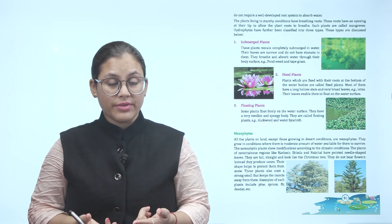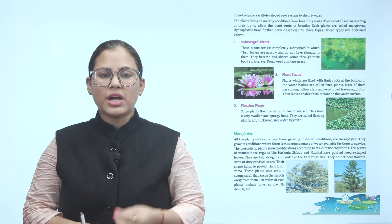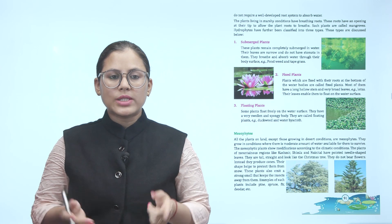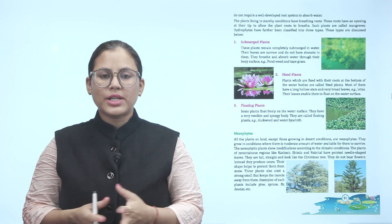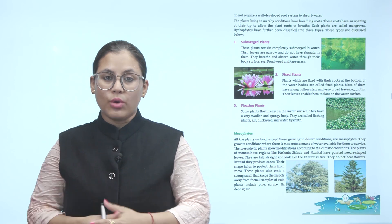The plants living in marshy conditions have breathing roots. These roots have an opening at their tip to allow the plants roots to breathe. Such plants are called mangroves. Hydrophytes have further been classified into three types.